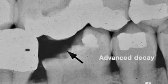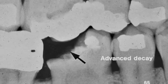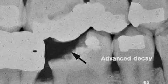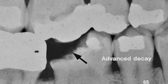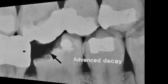Above number 30, can you see the radiolucency next to the opacity of the restoration? Recurrent caries are next to an existing restoration. This is tooth number 20 — the arrow points to the recurrent caries.